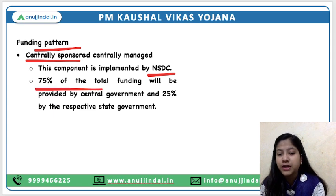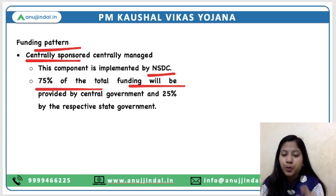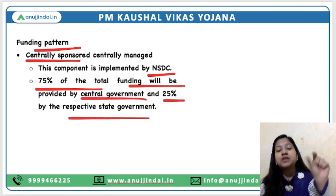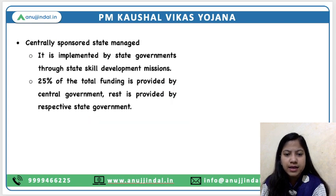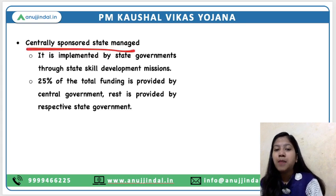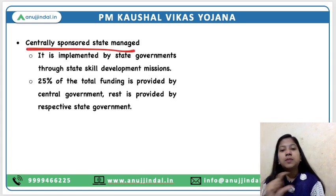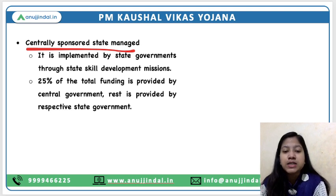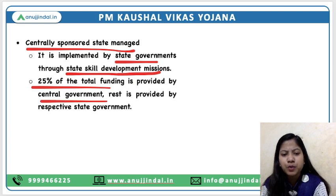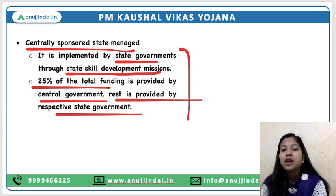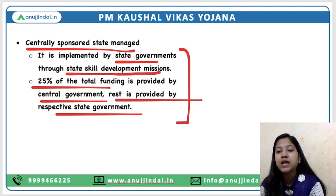75% of the total funding of 12,000 crores will be provided by the central government and 25% by the state government — so 75:25 is the ratio, do remember it. This scheme is centrally sponsored but implemented by state agencies through state skill development missions. For the state skill development missions, 25% of the funding is provided by the central government whereas 75% is given by the state.